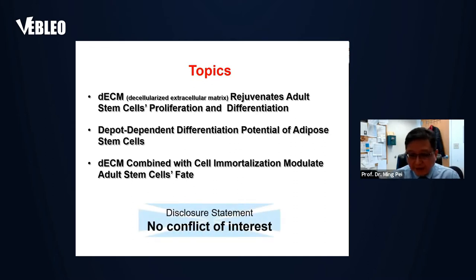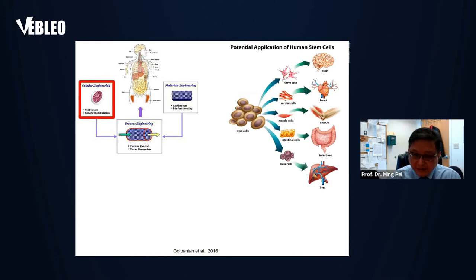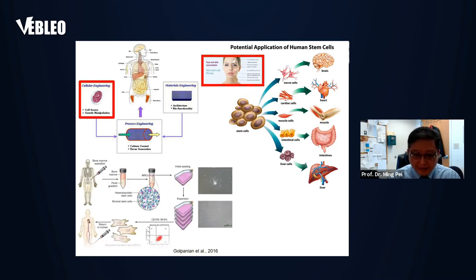There is no conflict of interest. Tissue engineering is a promising approach for tissue regeneration, including cell engineering, material engineering, and process engineering. Our study is more focused on stem cells and how to use stem cells to treat patients. The stem cells we isolate from the body have a limited amount, so we need to do extensive ex vivo expansion to get a large quantity of stem cells for tissue regeneration.